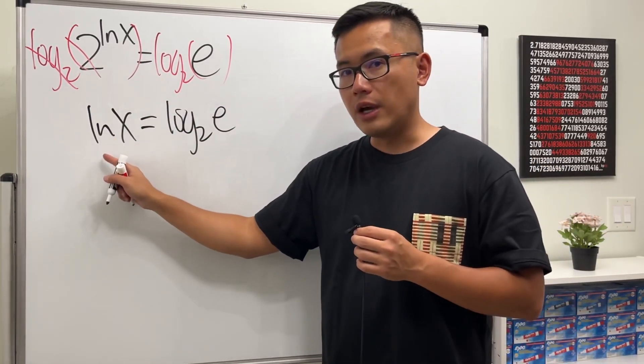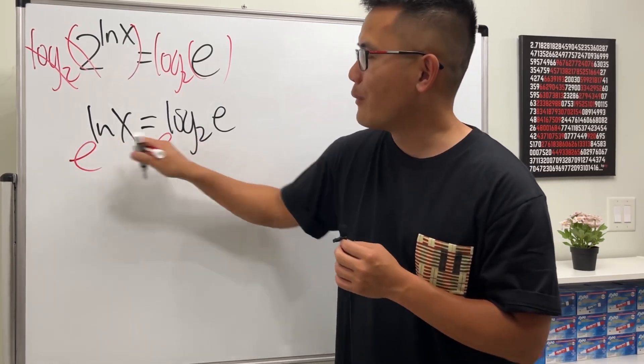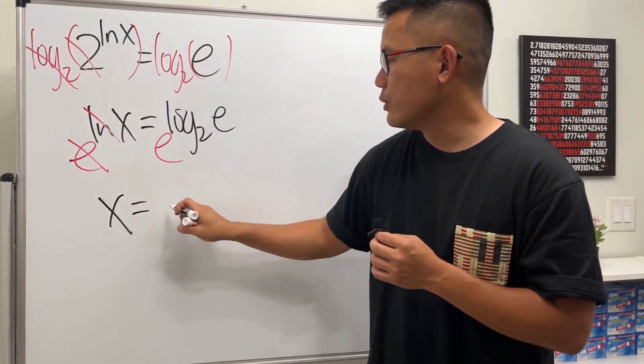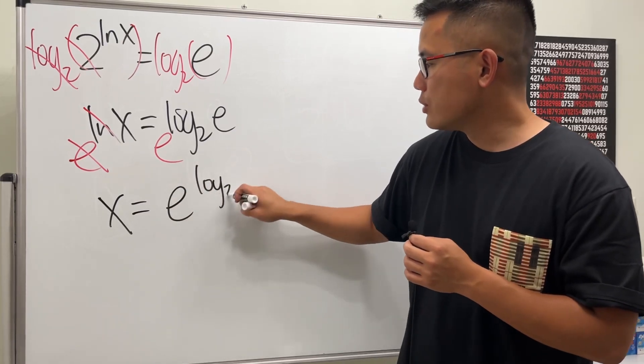To get rid of the ln, we can raise e to this power and e to that power. This and that will cancel, so we get x = e^(log₂ e).